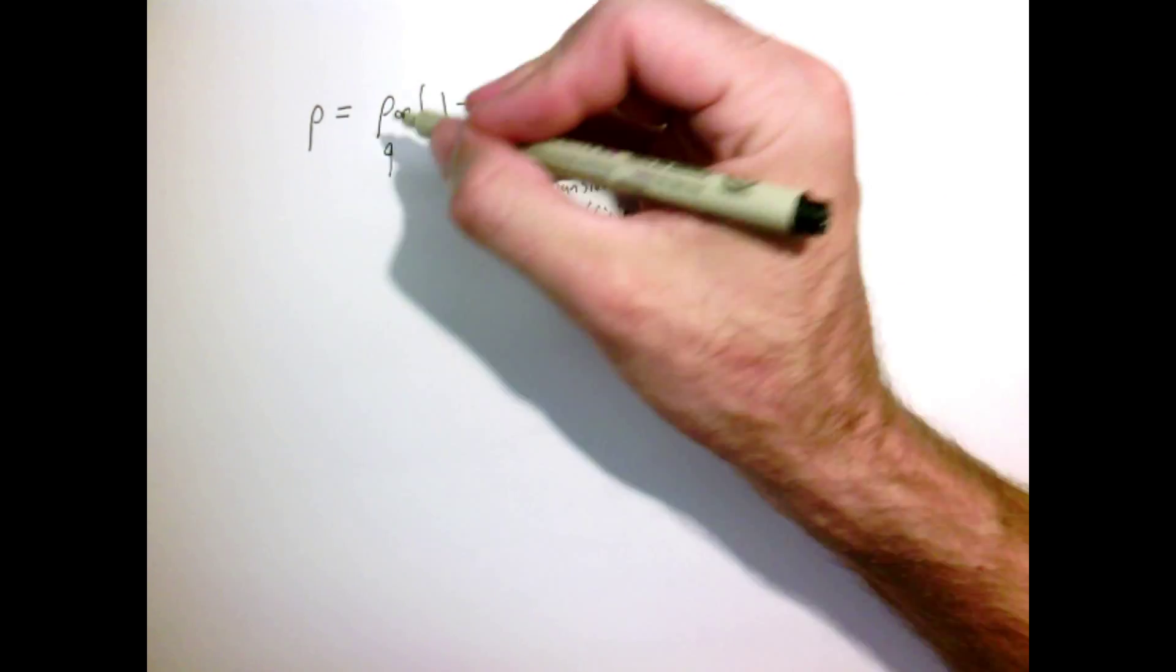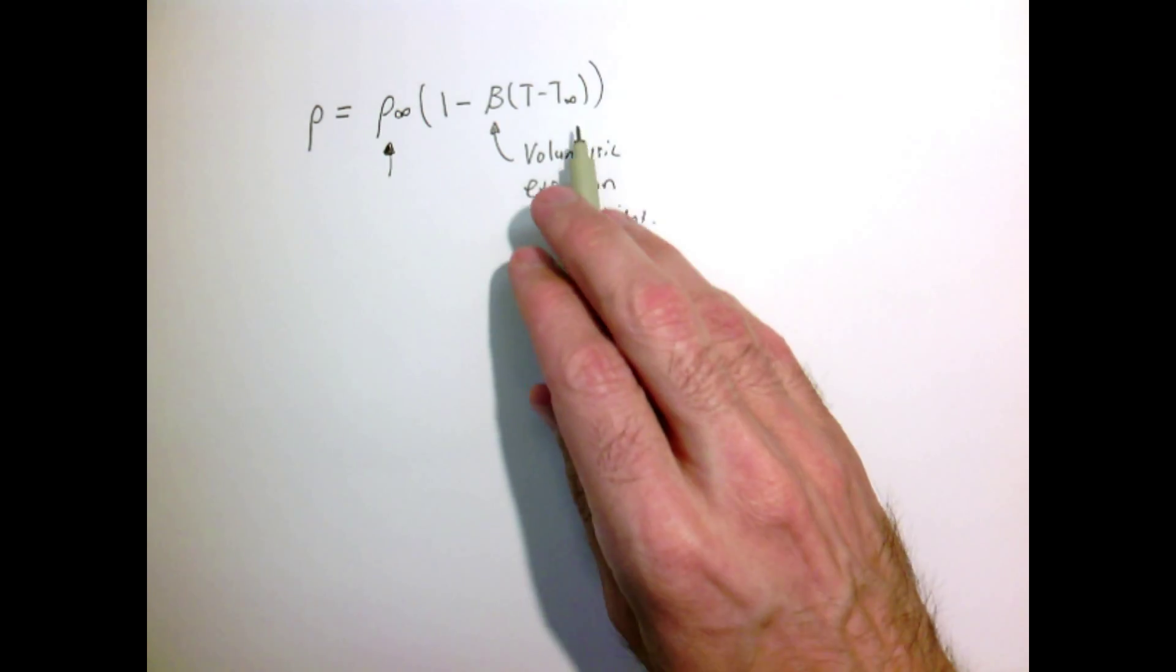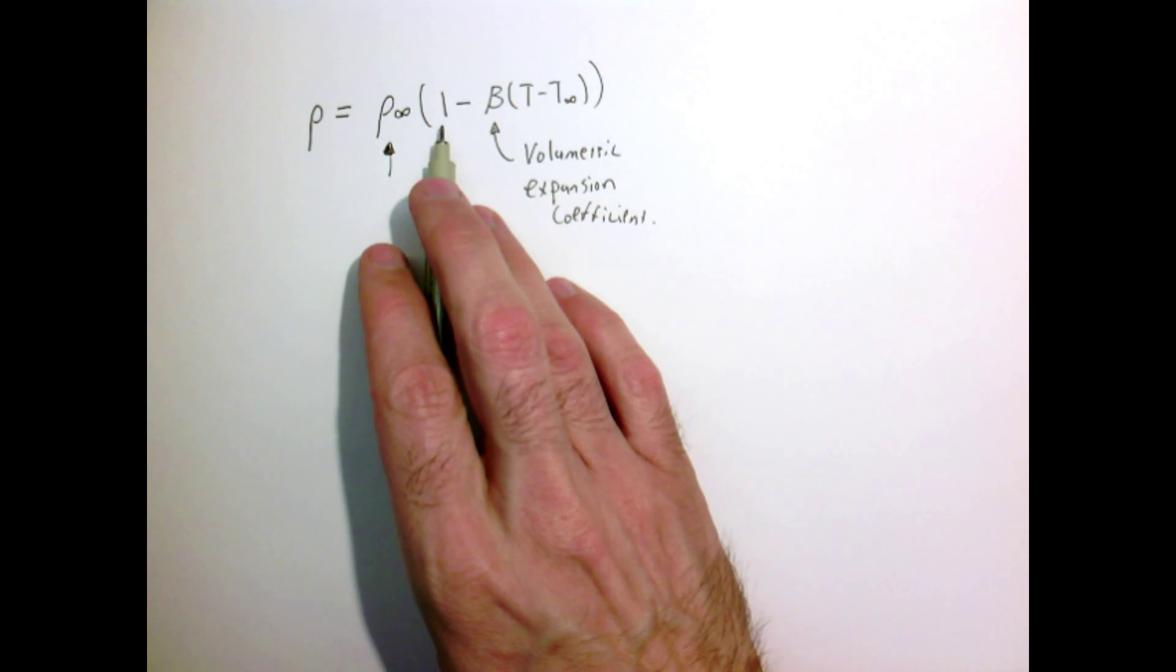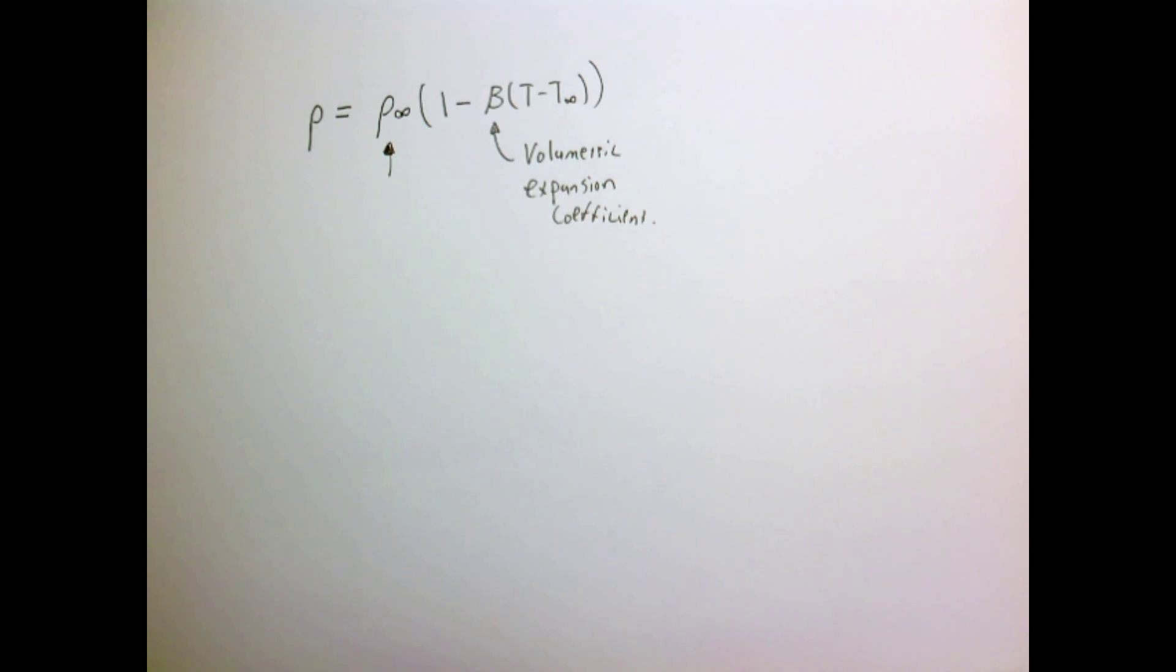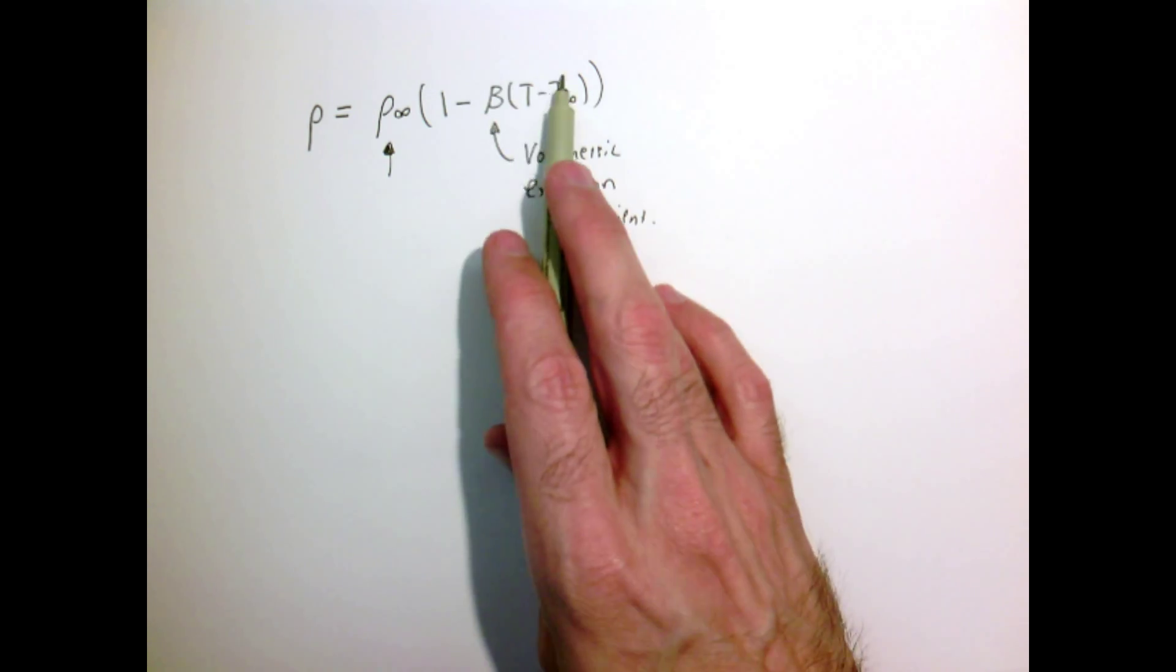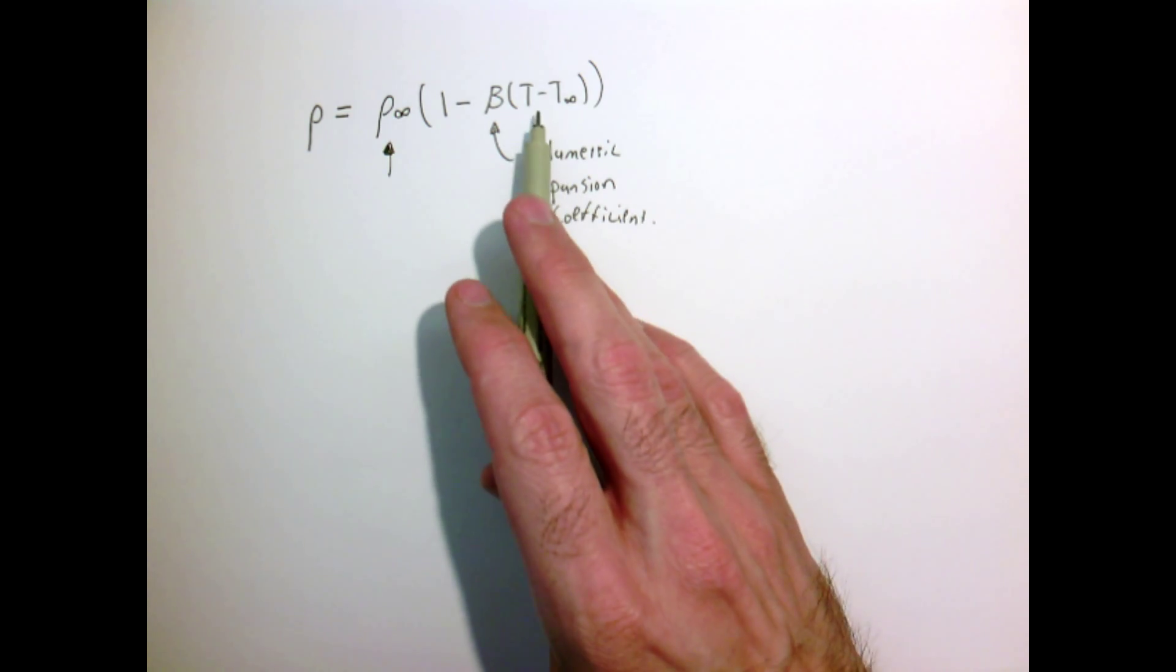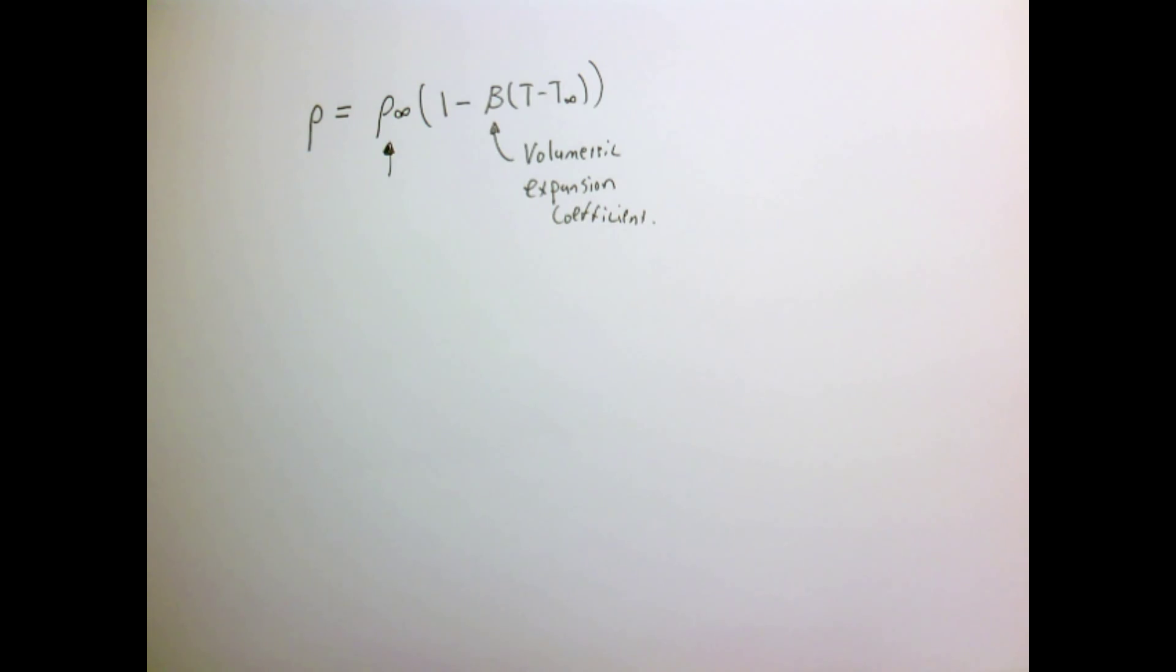We'll have some nominal value, ρ∞, which is the density at our nominal temperature T∞. We'll take this factor 1 minus β, which we'll call the volumetric expansion coefficient, times the temperature difference. So when our temperature of the fluid is T∞, this is zero and the density is simply that nominal density value. As we increase the temperature, we decrease the density. This is the simplest model.